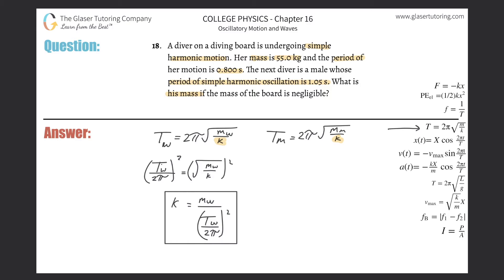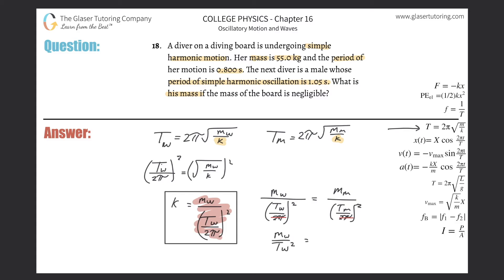Now set the two k expressions equal: mass of the woman divided by (period of the woman divided by 2π) squared equals mass of the man divided by (period of the man divided by 2π) squared. The 2π terms are both squared and appear on both sides, so they cancel. This gives a simple relationship: mass of the woman divided by period of the woman squared equals mass of the man divided by period of the man squared.